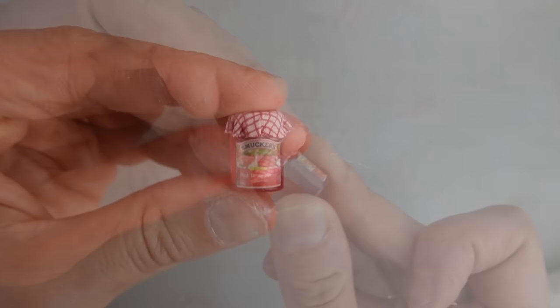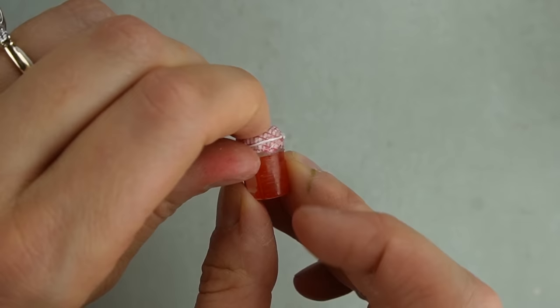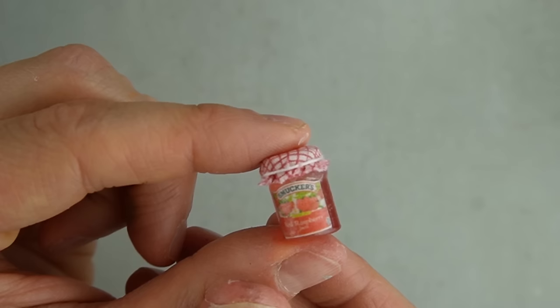I wrapped one strand of white embroidery floss around the top of the lid and tacked it in place on the back with some hot glue. I'm lifting up the edges of the fabric to make it look like the string is squeezing the fabric onto the jar.